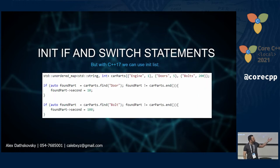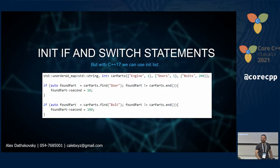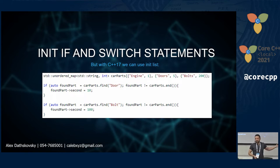In C++17 we got init-if and init-switch: you can initialize values inside the if condition itself. You can find the part inside the if, then check the found iterator. That iterator is available only inside the if scope, so you don't need to manually delete it. You can then do the same check for a second car part with another if. The code gets cleaner and more readable.